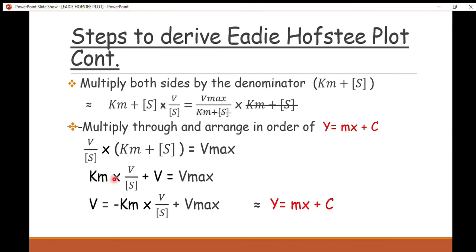Now we multiply through and rearrange to get the form y = mx + c, which is the equation of a line. Expanding, we multiply K_m by v/[S], and we multiply v/[S] by [S], which cancels to give v. Rearranging, we get: v = −K_m × (v/[S]) + V_max. So the slope m equals negative K_m, x equals v/[S], and the intercept c equals V_max.